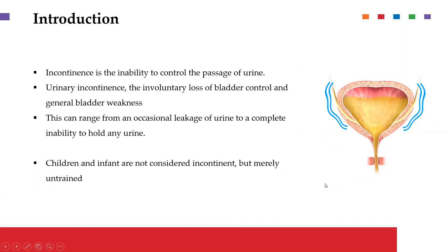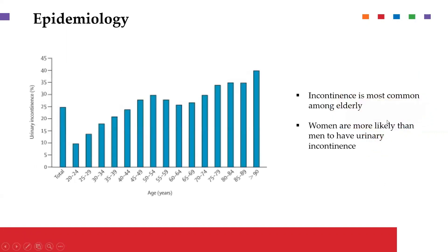This is a bit different for children — they are not considered to have incontinence until a certain age, as before that they are simply regarded as untrained. In terms of epidemiology, incontinence is most common in the elderly population, and among the different genders, women are more likely to have urinary incontinence, largely owing to the fact that the anatomy of their urinary tract is different and more congested within the pelvic region, which predisposes them to this problem.